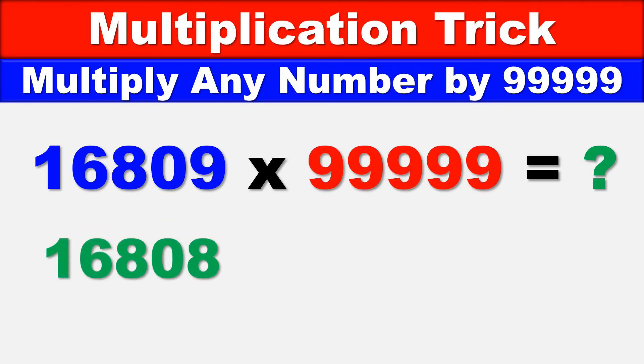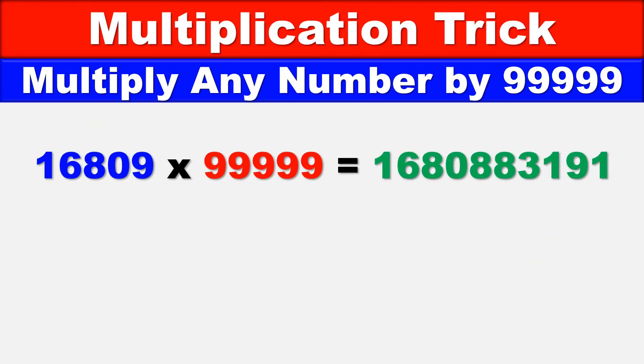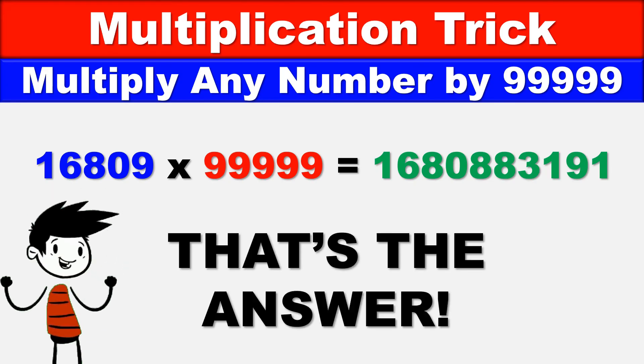9 minus 1 is 8, then 9 minus 6 is 3, 9 minus 8 is 1, 9 minus 0 is 9, and since 9 is the last digit, we subtract it from 10, so 10 minus 9 is 1. This means 16,809 times 99,999 equals 1,680,883,191. And that is the answer. Now that you know how to do this simple Vedic math trick, it's homework time.